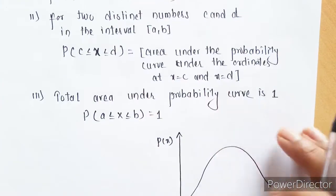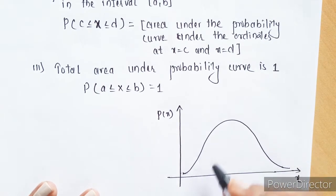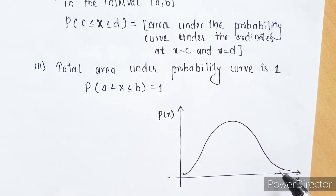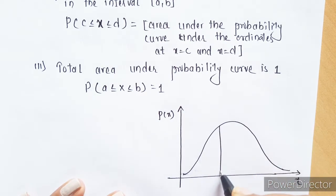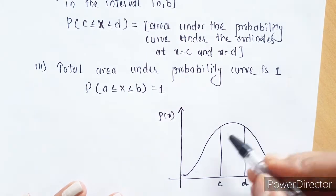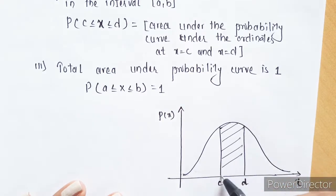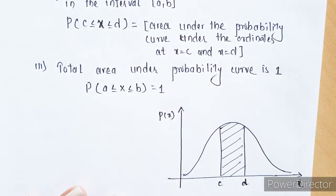So basically, what is a probability distribution? Suppose this is your probability distribution function. The area under this curve is nothing but the probability distribution function. For values C to D, the area under this curve is nothing but the probability distribution for the interval C to D.